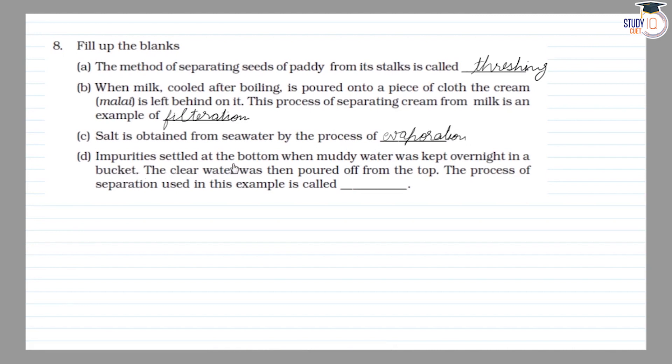(d) Next: Impurities settled at the bottom when muddy water was kept overnight in a bucket. The clear water was then poured off from the top. The process of separation used in this example is decantation.